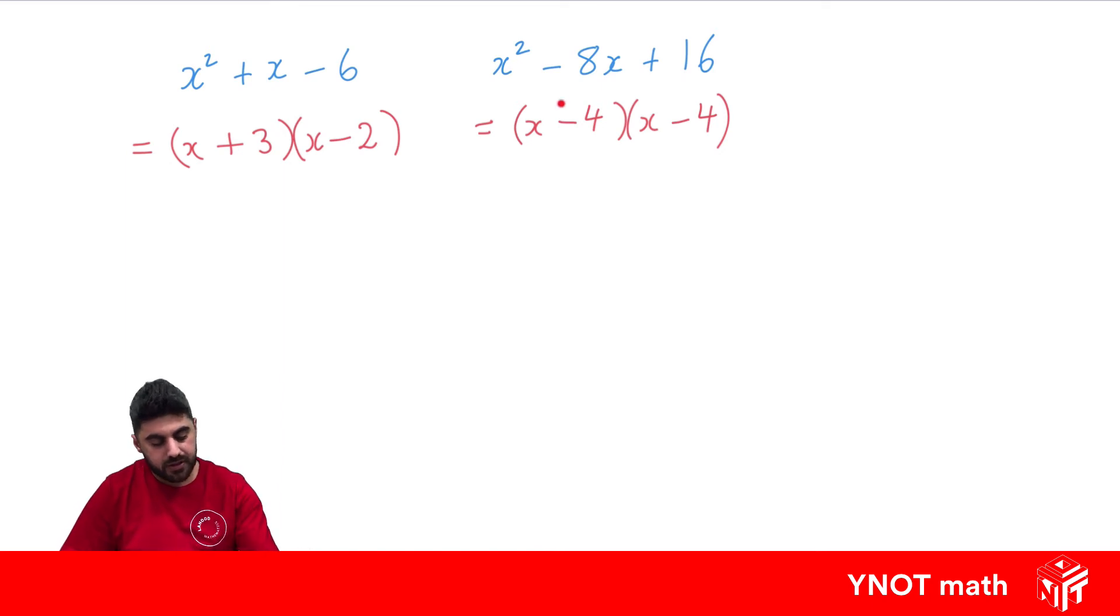Because -4 × -4 gives us positive 16, and -4 + -4 gives us -8. If your brackets end up being the same, this is a special case where we have a perfect squared quadratic. We can rewrite that as (x - 4)², because it's being multiplied by itself.